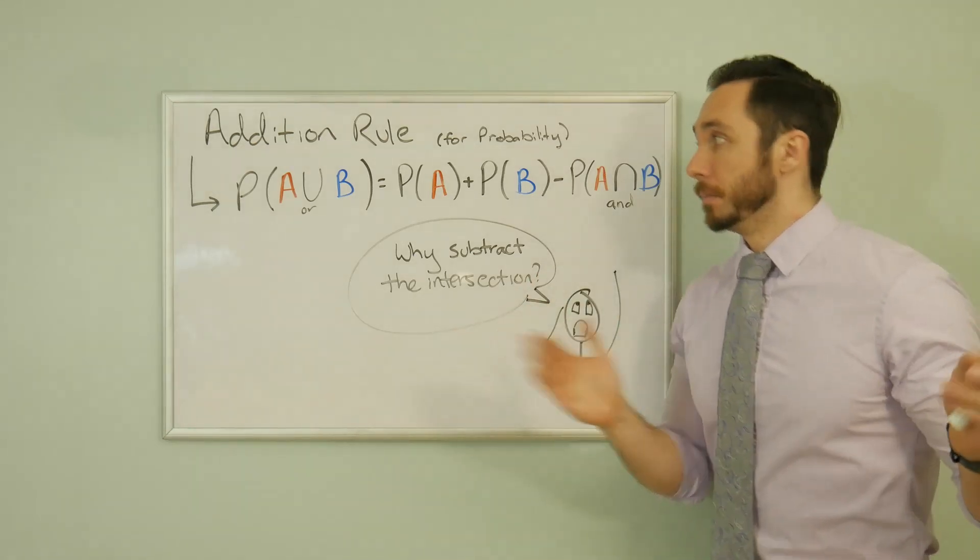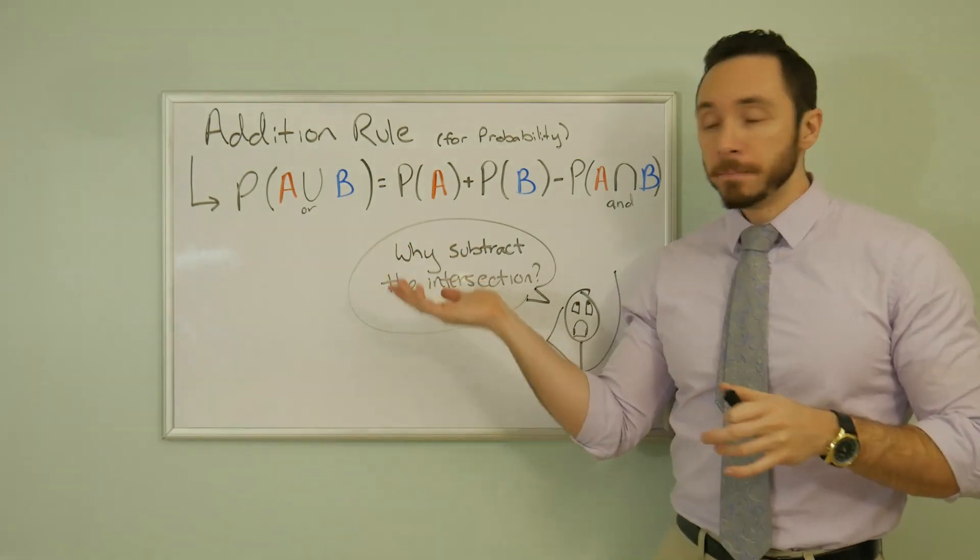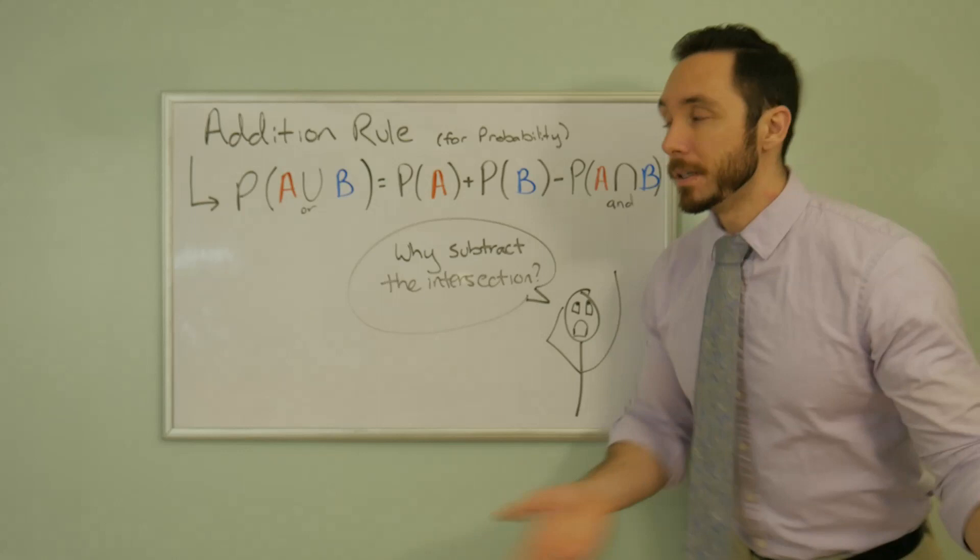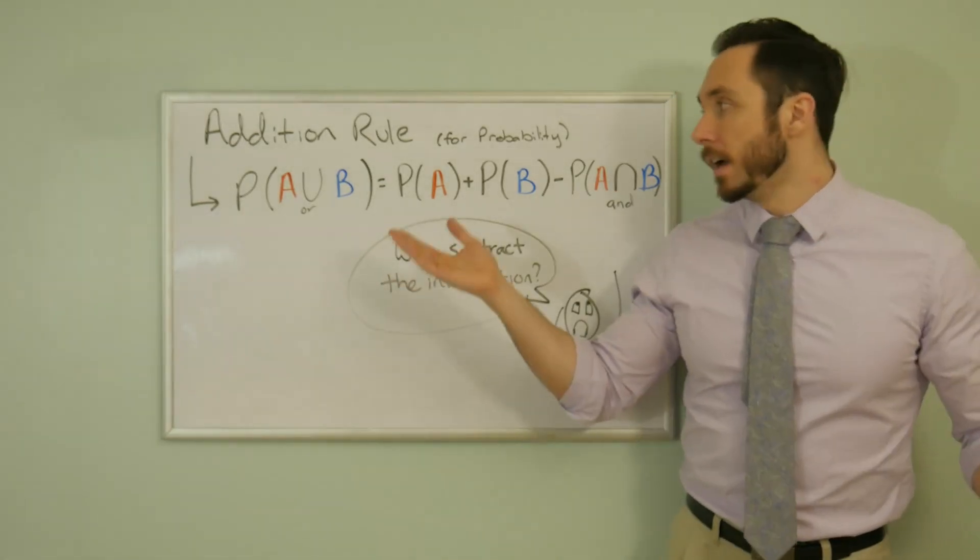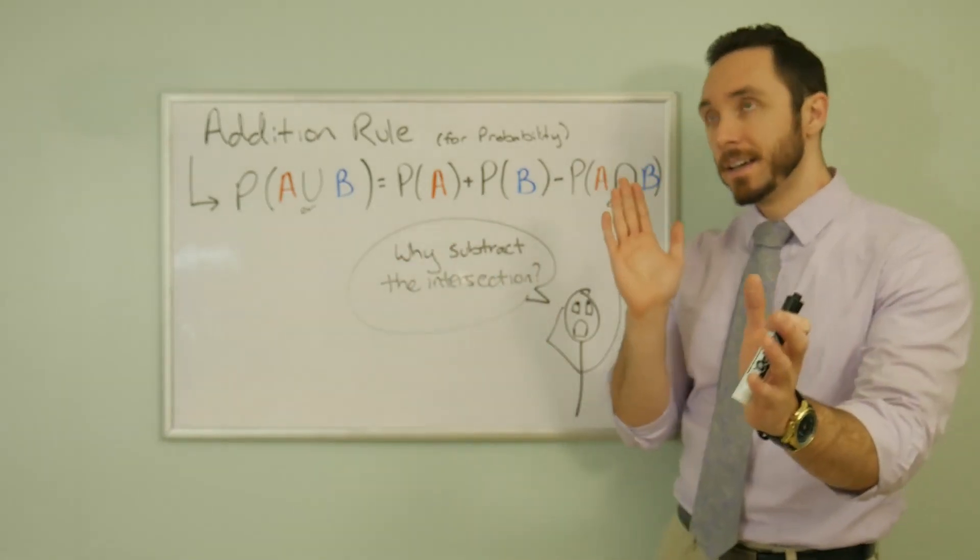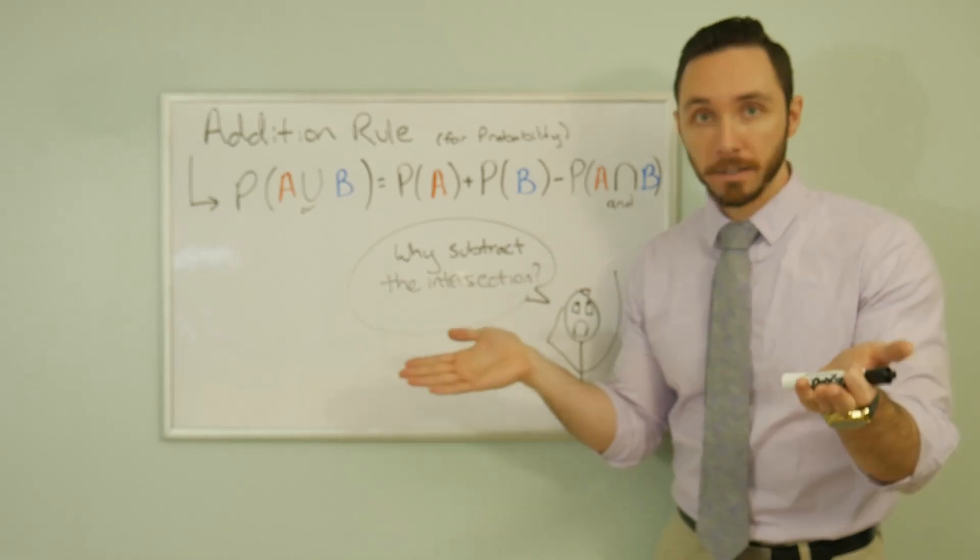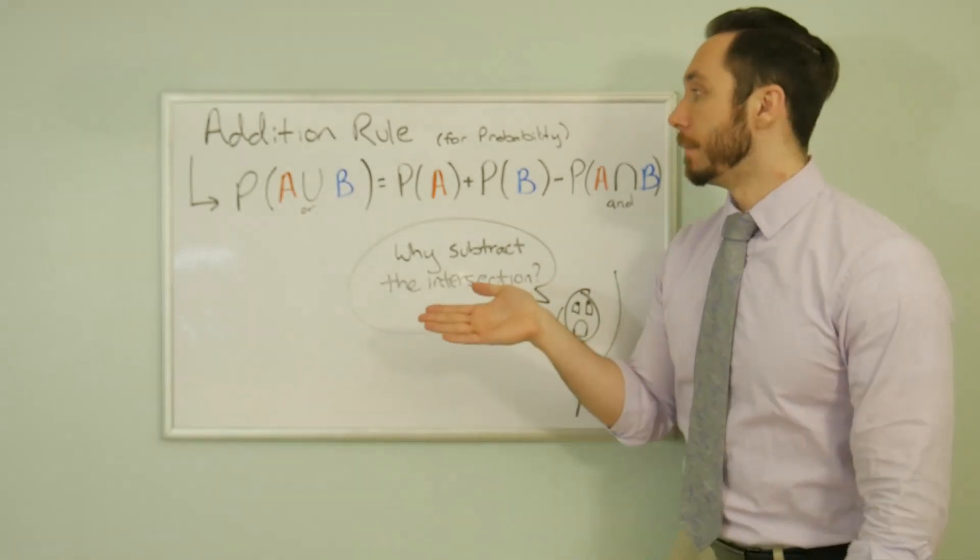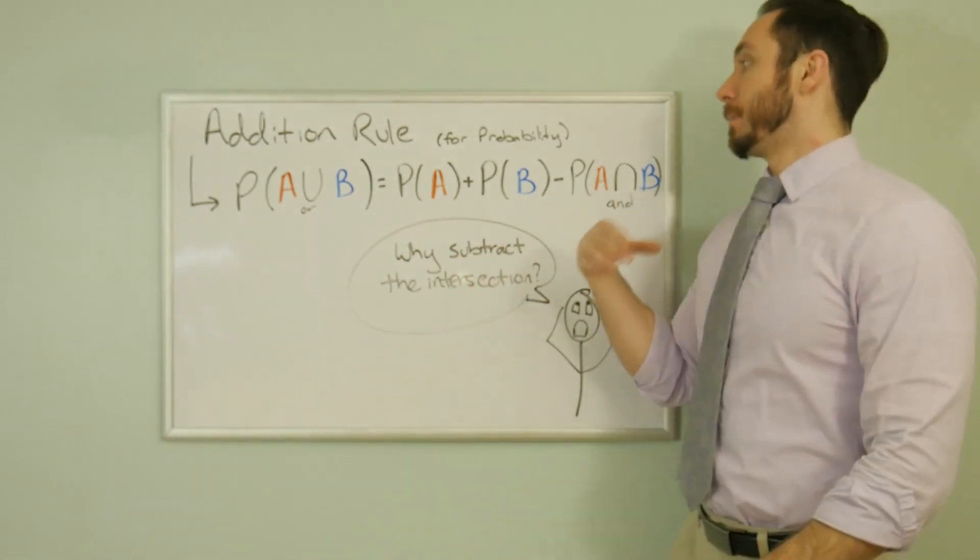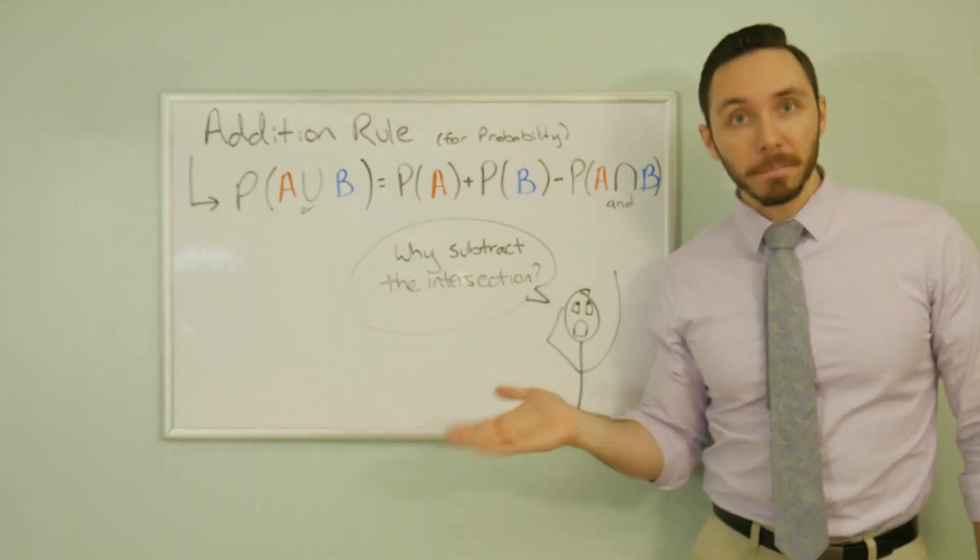So what is the addition rule? The addition rule is this guy right here. This is saying the probability of A or B. We can say A is an event of liking apples and B is the event of liking bananas. What is the probability of liking apples or bananas? This is liking at least one, apples or bananas, and if you happen to like both, then great, you like one of them. It equals the probability of liking apples plus the probability of liking bananas, and then you subtract off the probability of liking apples and bananas.